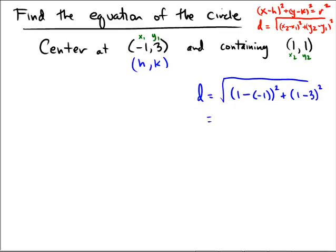So now we have radical 1 minus negative 1 is 2 squared plus 1 minus 3 which is negative 2 squared.